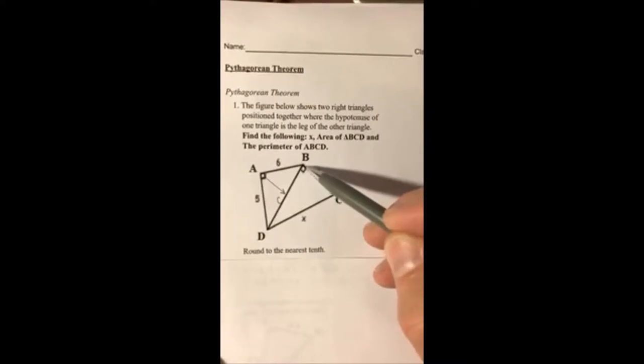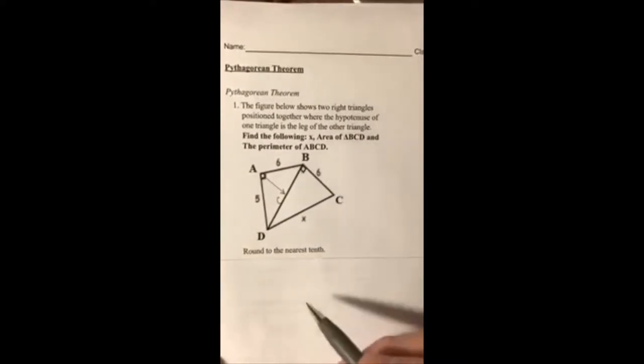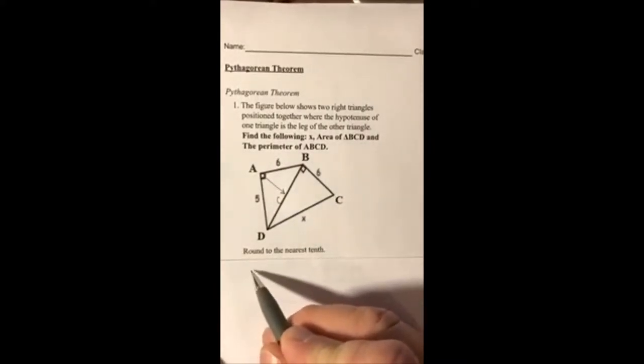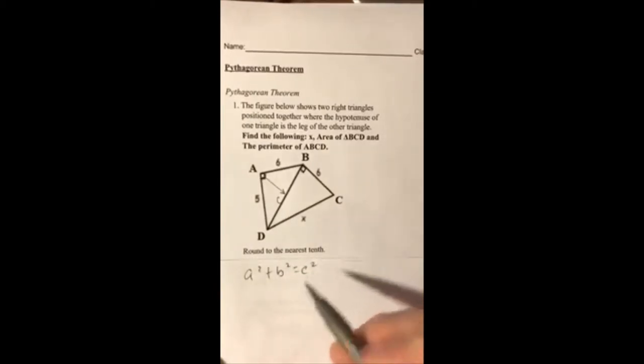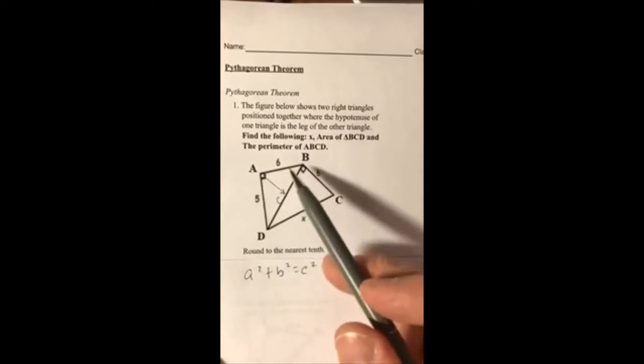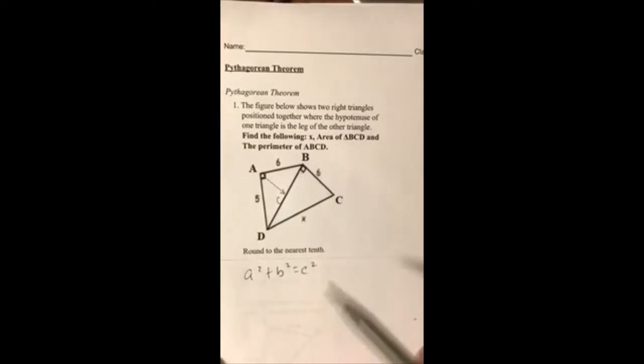We're going to work this triangle first, and then we're going to come over here and work this triangle. So to begin with, I'm going to work with a² + b² = c². My a and my b are the other two sides, so I'm going to put 5² + 6² = c².